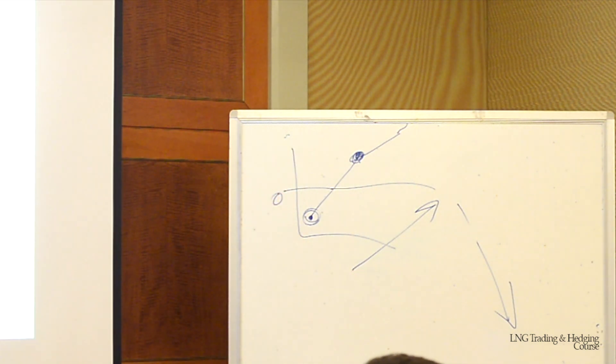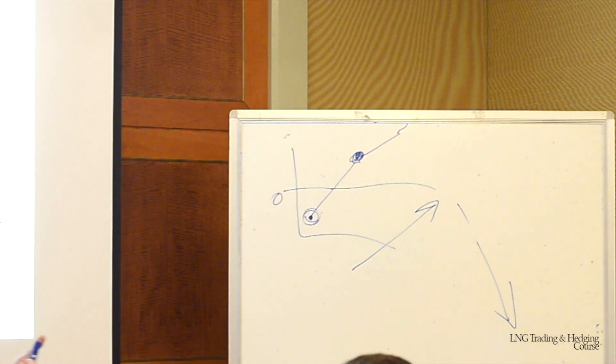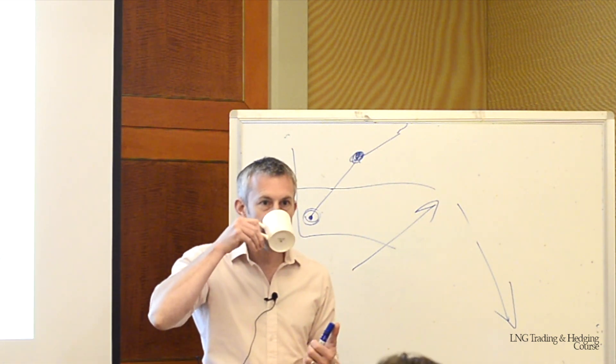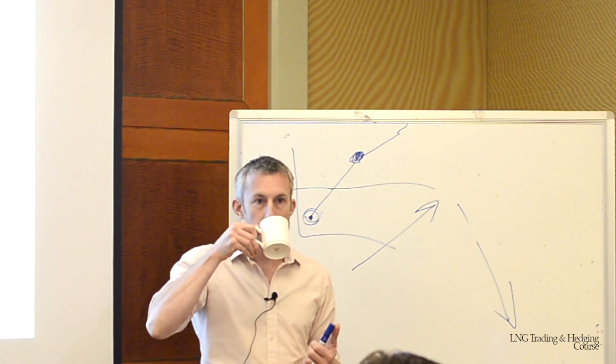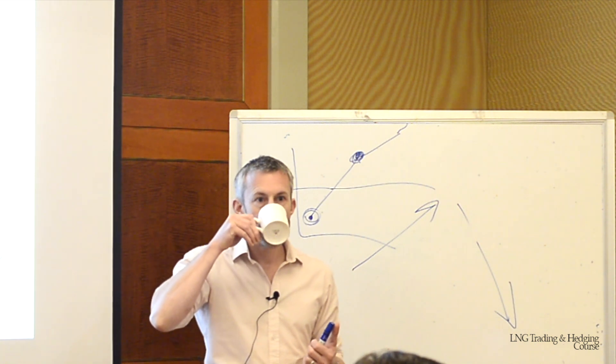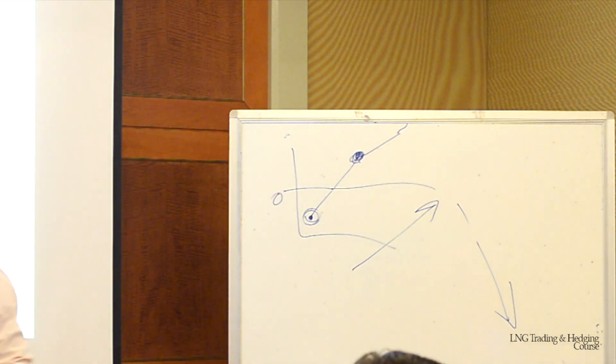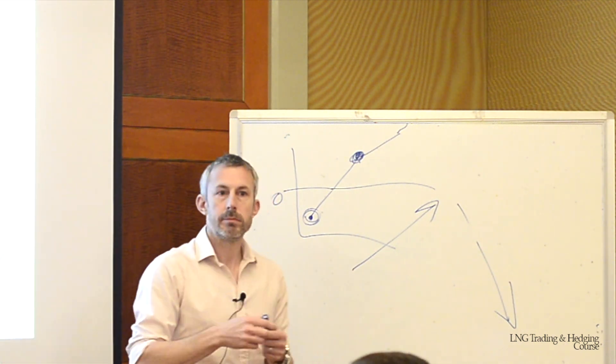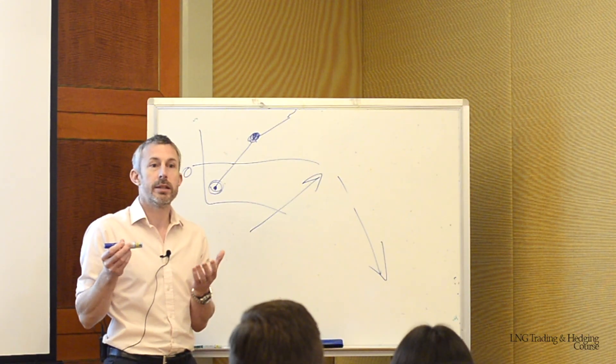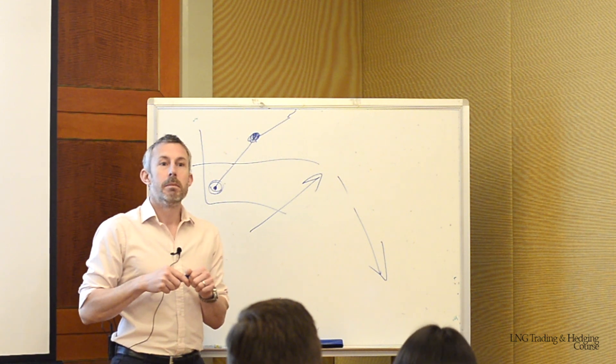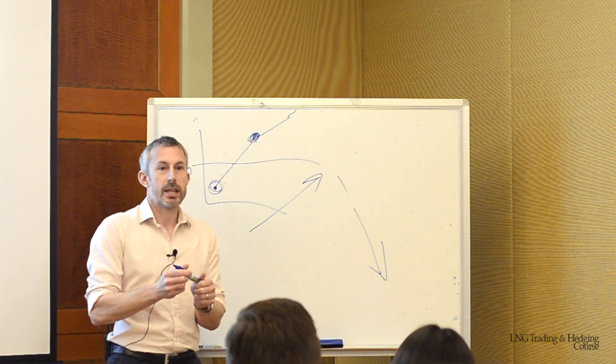You're in a situation where you have to buy Brent and you have to sell TTF. Obviously, you're making a loss and it's about minimizing the loss. But you're still making a loss. So what do you do to overcome that? Do you leverage it to Asia for instance? Well, sometimes you can't do anything.